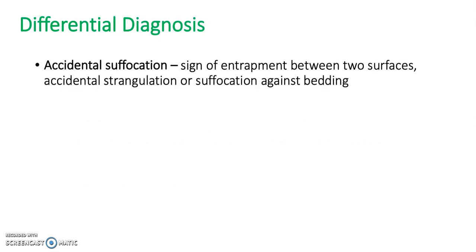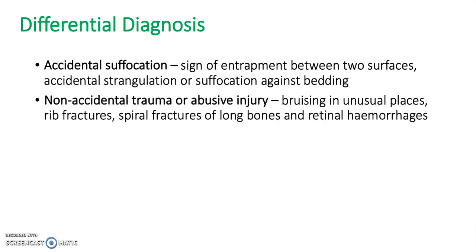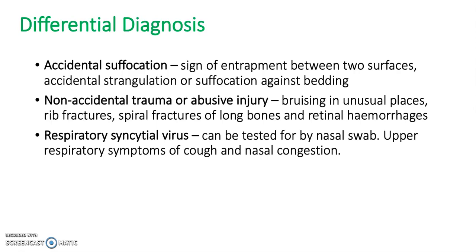Differential diagnosis includes: accidental suffocation — there would be signs of entrapment between two surfaces, accidental strangulation, or suffocation against bedding. Non-accidental trauma or abusive injury — bruising in unusual places, rib fractures, spiral fractures of long bones, and retinal haemorrhages may be seen. Respiratory syncytial virus — tested for using a nasal swab, with upper respiratory symptoms of cough and nasal congestion in the history. Pertussis, as above.